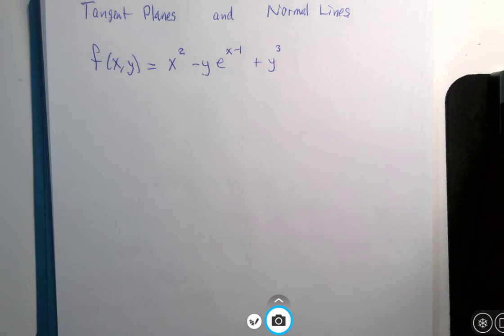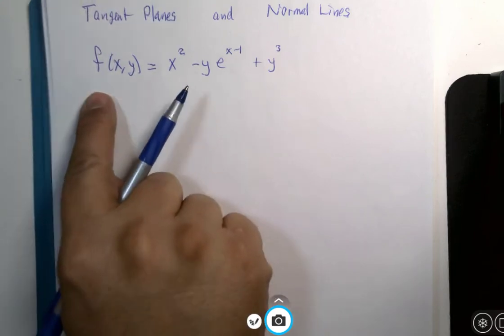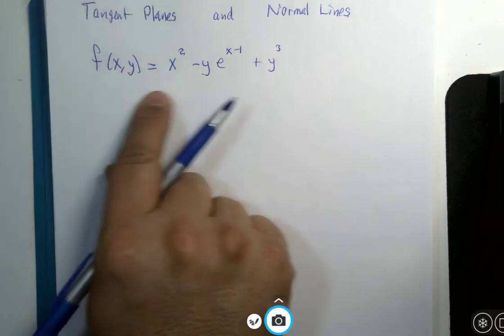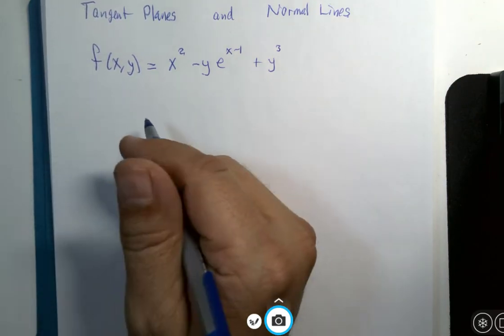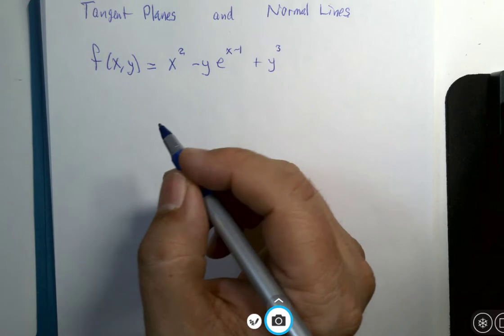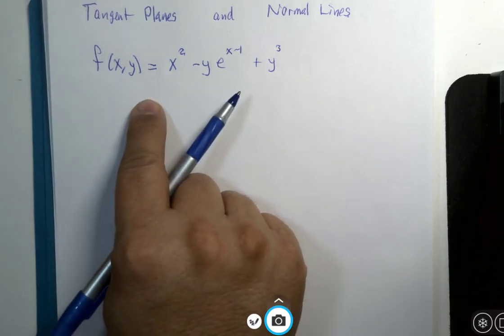Here is a different variation of how to give the information for a surface. So f of xy would be like saying z equals. And what we are going to do is we are going to use the gradient to find the normal vector.